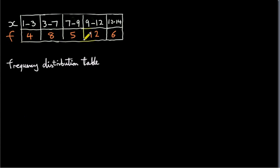Here is a frequency distribution table. It gives the frequencies of the x values. The x values are in the first row. For example, for the interval 1 to 3, we have a frequency of 4. That means there are 4 x values lying between 1 and 3. We don't have the frequency of each individual x value because all the x values have been grouped for convenience. Similarly, the interval 3 to 7 has a frequency of 8, meaning there are 8 x values lying between 3 and 7, and so on.